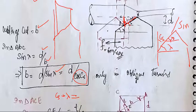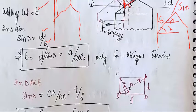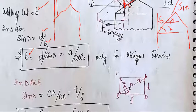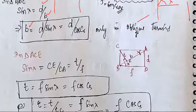So the cutting width b is equal to d divided by sin(lambda), which is also equal to d divided by cos(Cs). This formula is valid only for oblique turning.